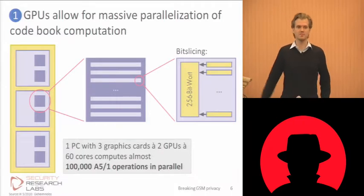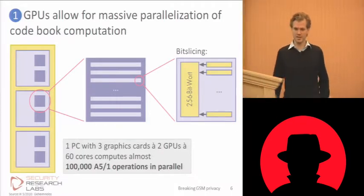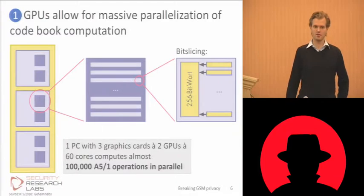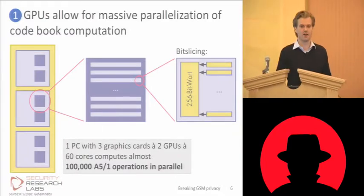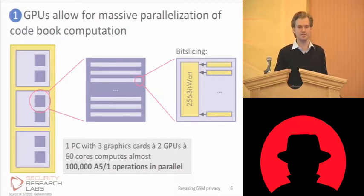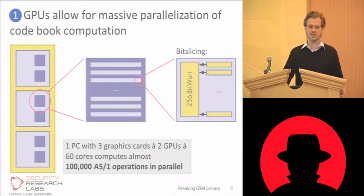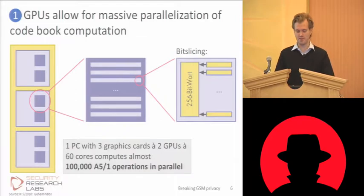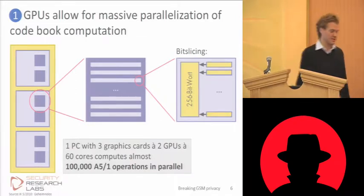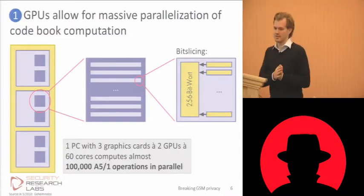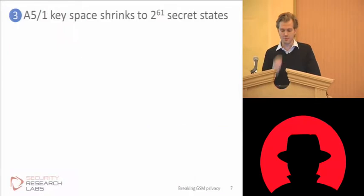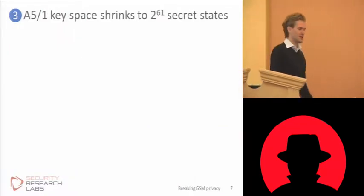Almost the same degree of parallelization can be reached for the cracking phase, not quite as trivial to implement though. For the generation this was fairly straightforward, since the computing streams are independent of one another. We also used one statistical property of A5/1 to further optimize this.